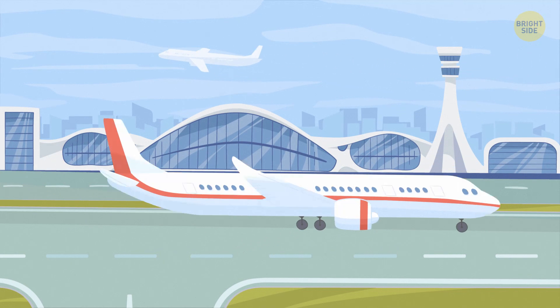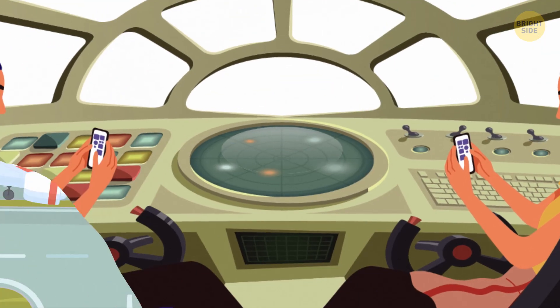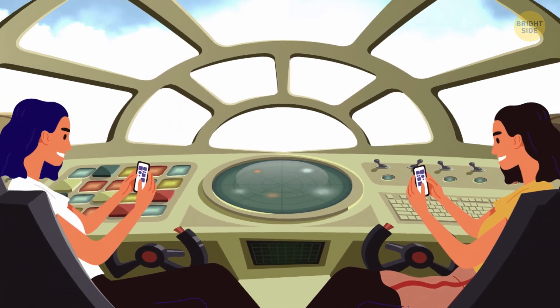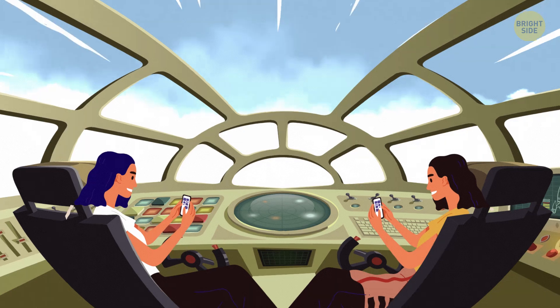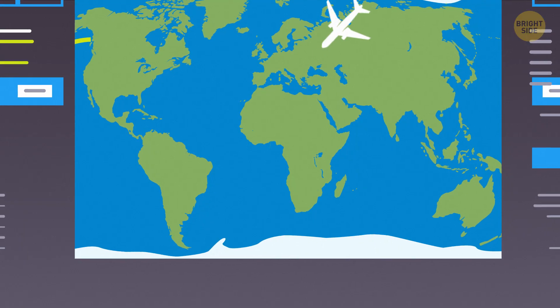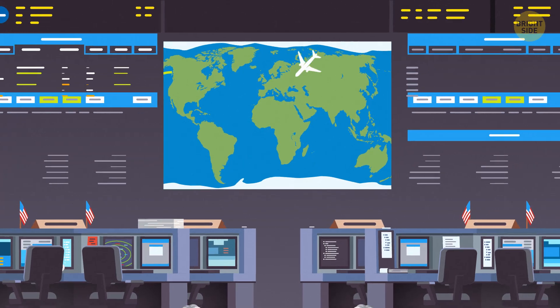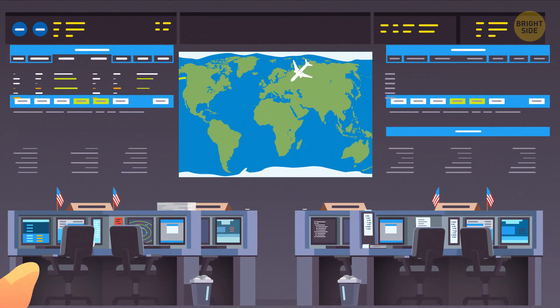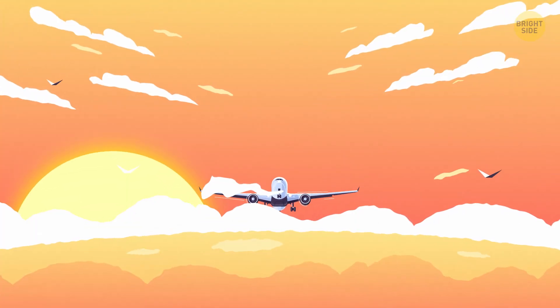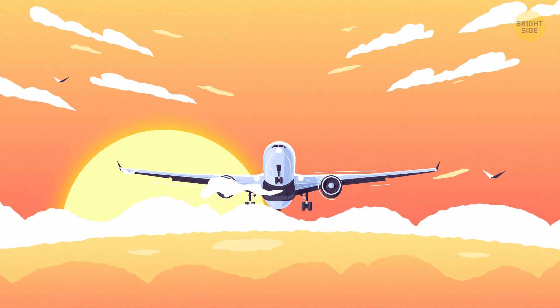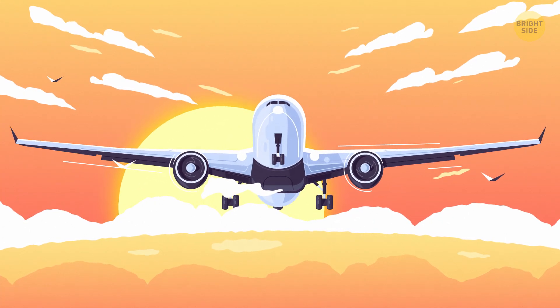When the plane's in the air, it's on autopilot. That's not to say that pilots don't do anything but sit around the cabin during the flight. They're constantly in touch with the flight control center, adjusting the autopilot if necessary, and keeping everything under control. This is all to make your flight smooth and pleasant and bring you to your destination safe and sound.